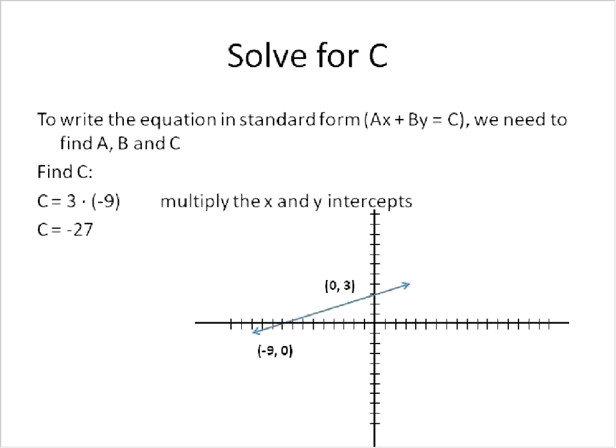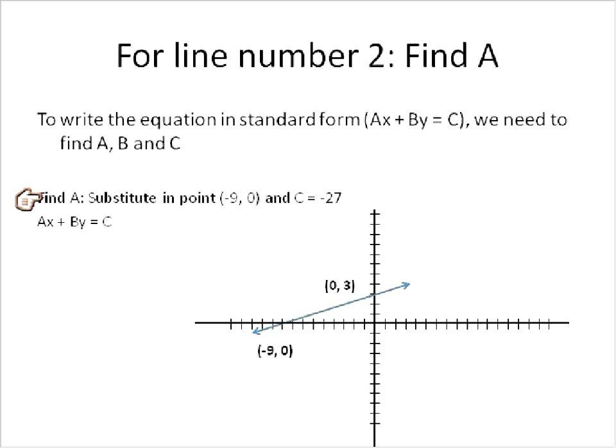We need to find C first because we use that value in solving and finding A and also finding B. We're going to substitute in the point negative 9, 0 into this equation. Negative 9 is equal to x, 0 is equal to y, and the value for C is negative 27. So we get A times negative 9 plus B times 0 is equal to negative 27. B times 0 is equal to 0, so we can remove that part. And A times negative 9 is simply negative 9A. When we're solving for A, we'll divide both sides by negative 9 for a result of A being equal to 3.